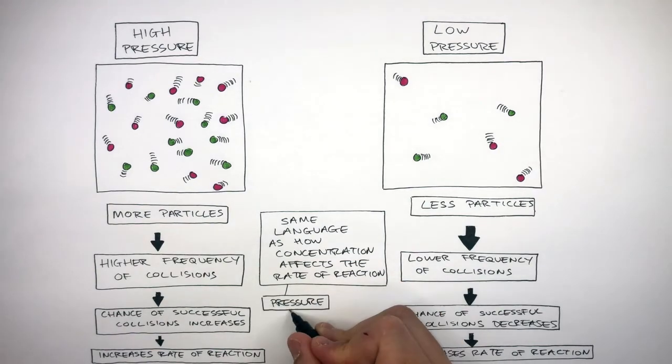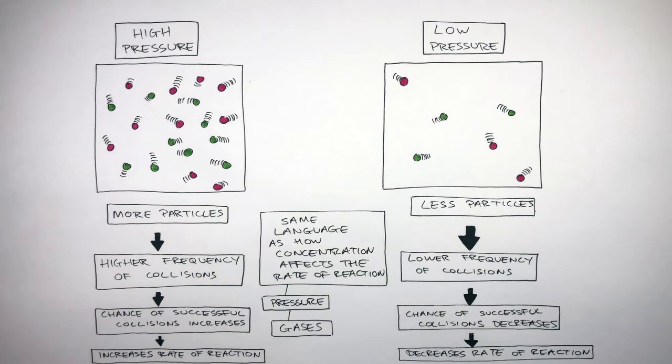But pressure is for gases. And in a balanced equation, to find out if you are dealing with pressure or concentration, just look for the symbol G in brackets. This stands for gas.